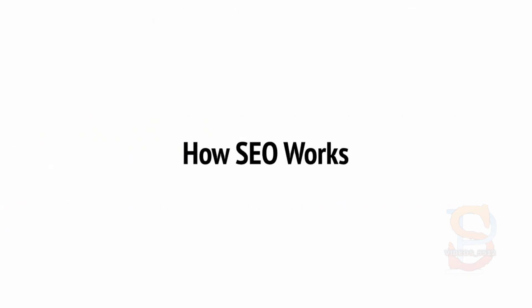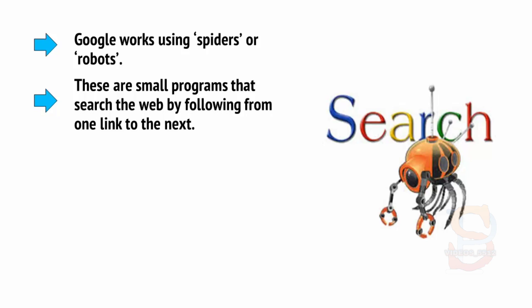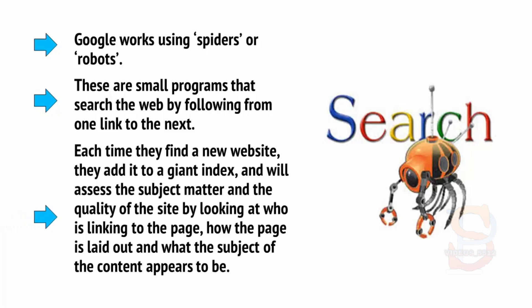In order to get to the top of Google, the aim is to try and understand how Google works, how Google decides which sites are worthwhile, and how you can manipulate those factors in order to move your site to the top. Google works using spiders, or robots. These are small programs that search the web by following from one link to the next. Each time they find a new website, they add it to a giant index, and will assess the subject matter and the quality of the site by looking at who is linking to the page, how the page is laid out, and what the subject of the content appears to be.